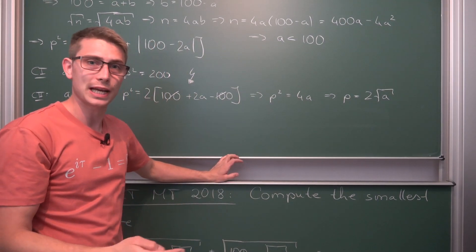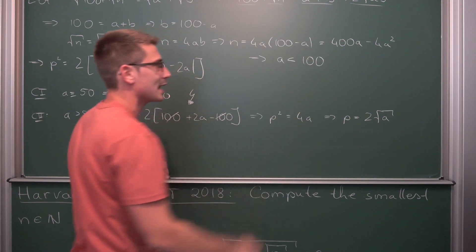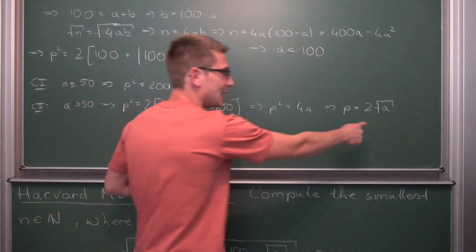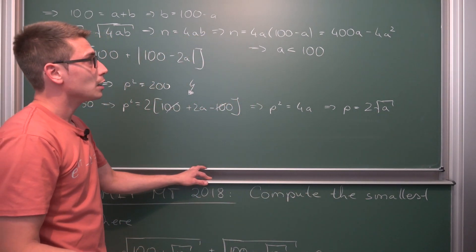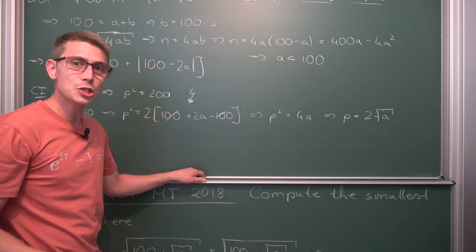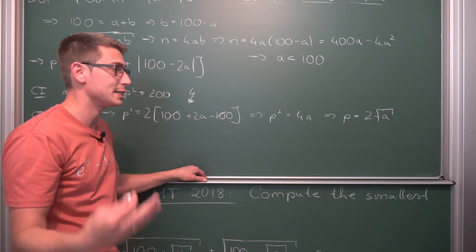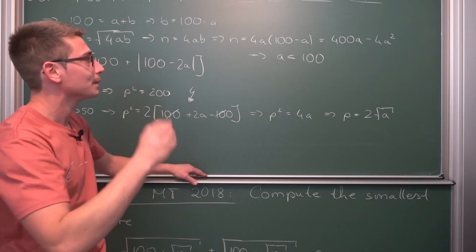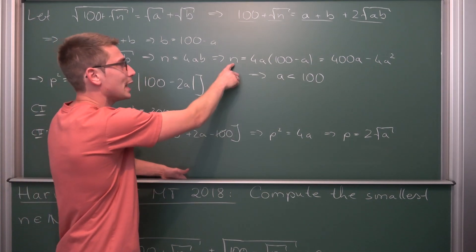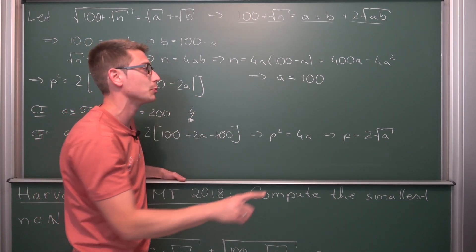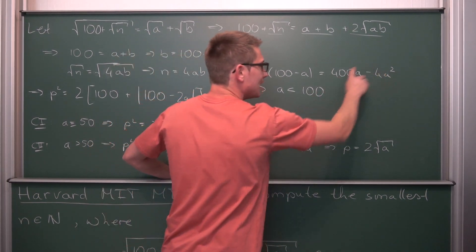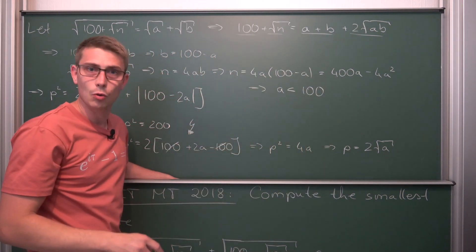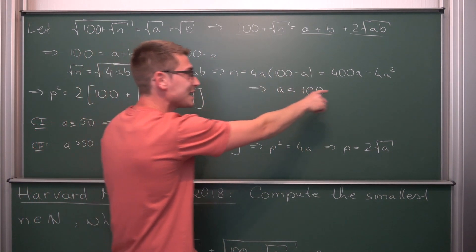Taking the square root gives p = 2√a. So p must equal 2√a. But how do we decide what a is? Well, since p is an integer, a must be a perfect square. Also, a must be less than 100 — so 100 itself doesn't work. Now, we want the smallest n. Looking at the parabolic relationship n = 4a(100−a), the bigger our a, the smaller our n.